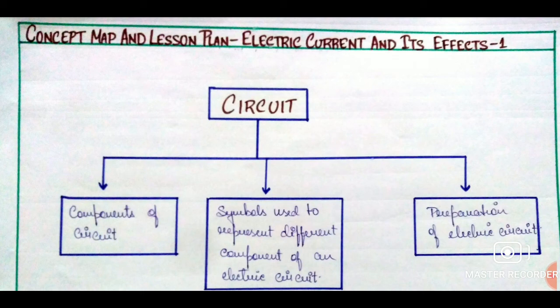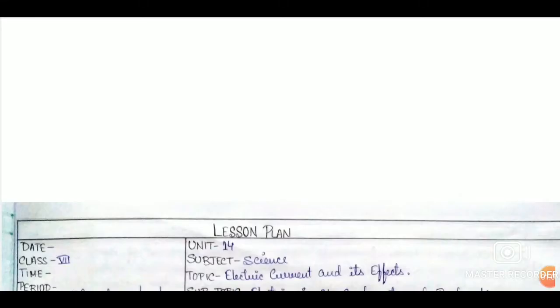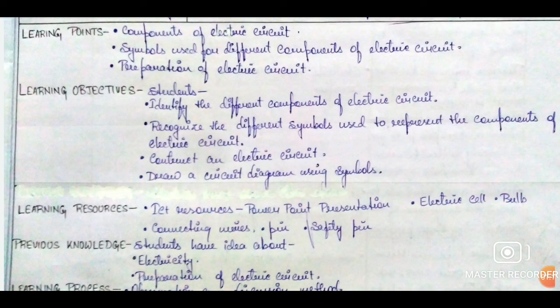Here is the concept map of our first lesson plan. After the concept map, we will write the usual details like date, class, time, period, and on the other side, unit, subject, topic, and subtopic if necessary. Then we move towards the learning points. Learning points are simple phrases that describe the important concepts that are going to be discussed in that particular lesson that day.